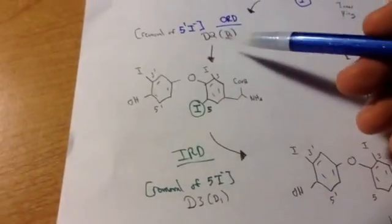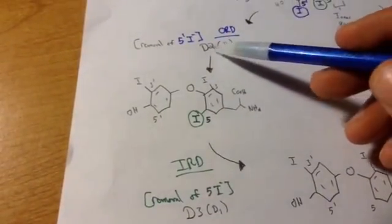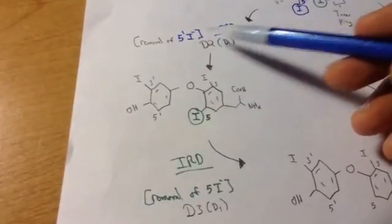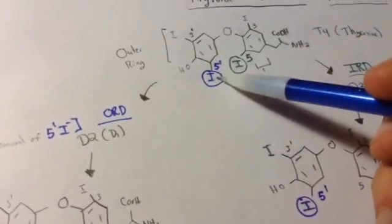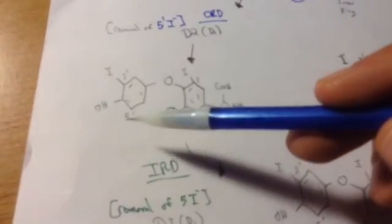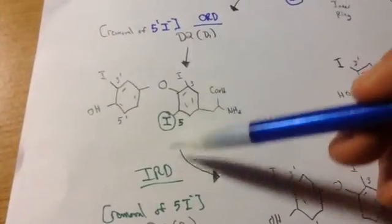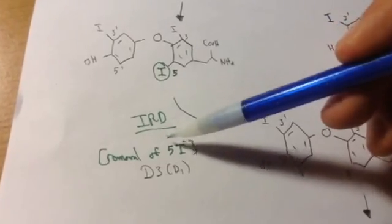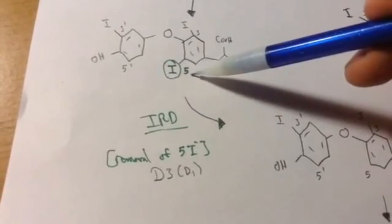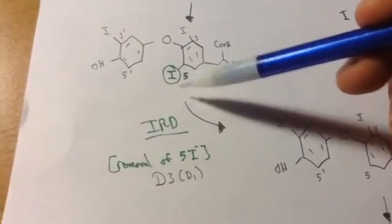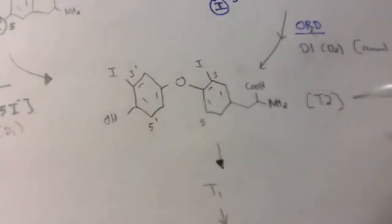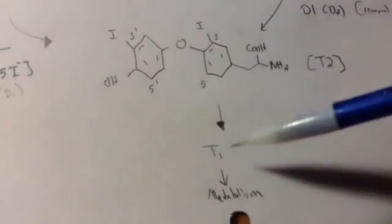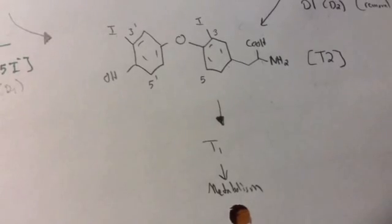Okay, so back to this. Like I said, on the outer ring, you remove the 5' first. So here's the 5'. And over here you see it was removed. Then we use, again, D3 to remove the 5. And then you get ultimately the same thing, which is the T2 molecule, which leads to the T1 and ultimate metabolism.